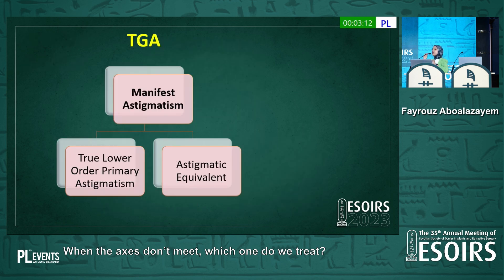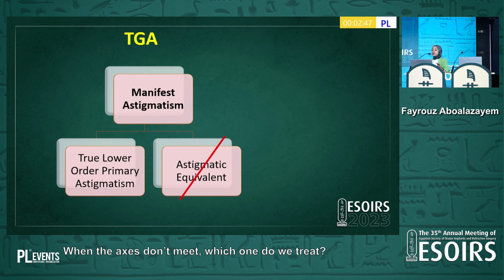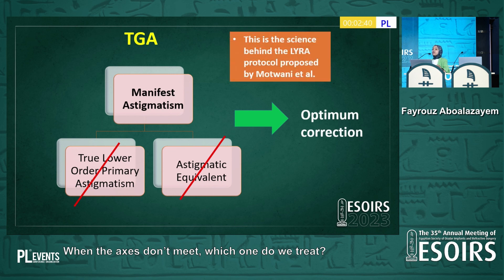However, when you're using Contura or topography-guided ablation, you treat this astigmatic equivalent by default because it starts the ablation with the regularization of the cornea. This regularization removes micro-irregularities responsible for the astigmatic equivalent. So if you treat the manifest refraction, you will end up with induced new astigmatism. But when you treat the lower-order astigmatism, you will reach an optimum correction. This is the science behind the Lyra protocol, proposed by Professor Mettwie.